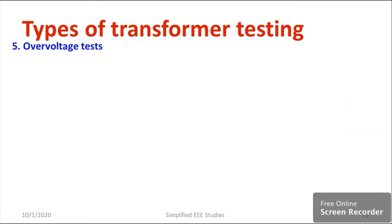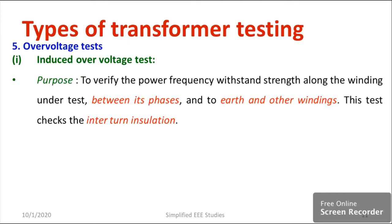Now I would like to discuss about the overvoltage test. There are two procedures: induced overvoltage test and partial discharge test. The induced overvoltage test is conducted to verify the power frequency withstand strength of the winding under test, between its phases and to earth and other windings. This test checks the inter-turn insulation.